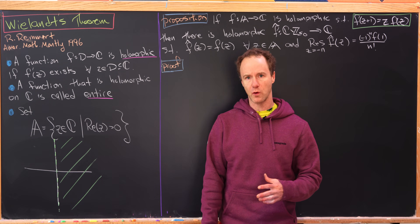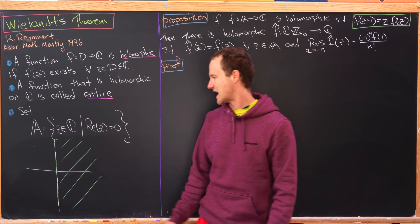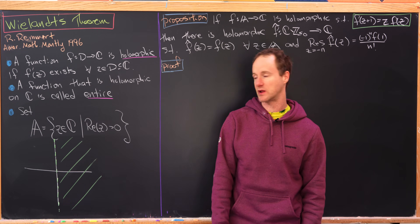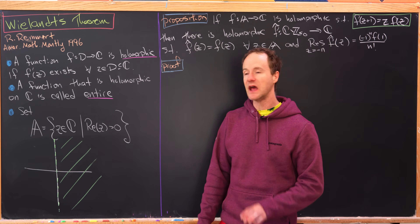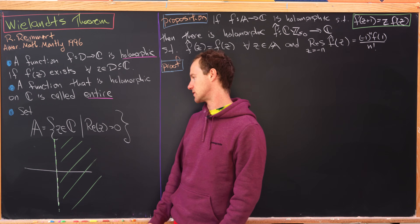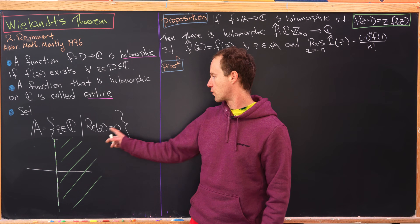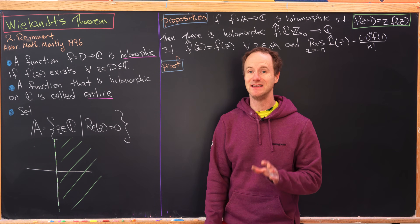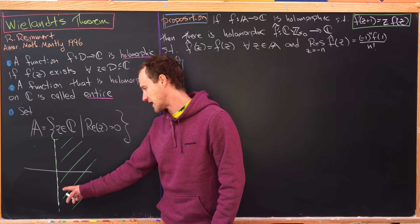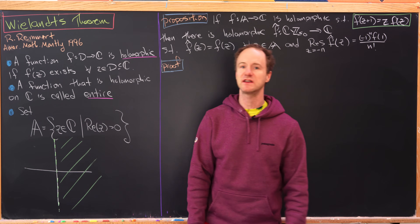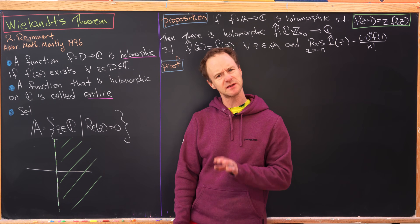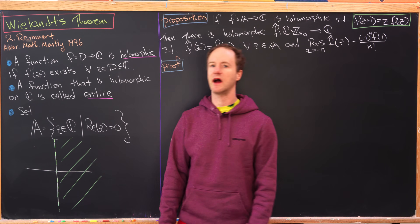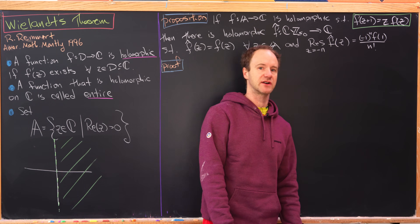For this video, we're going to set A equal to the right half-plane — all complex numbers where the real part is positive. That does not include the imaginary axis, but everything to the right of it. There's a dotted line along the imaginary axis to indicate this.